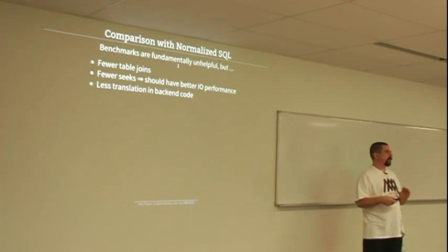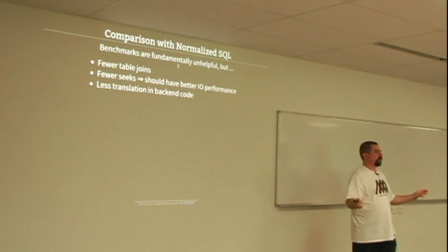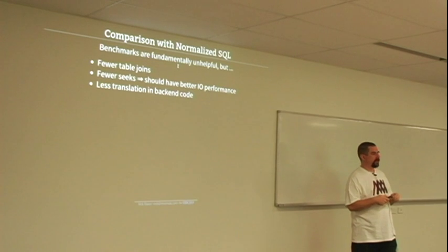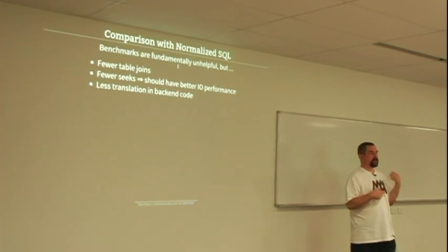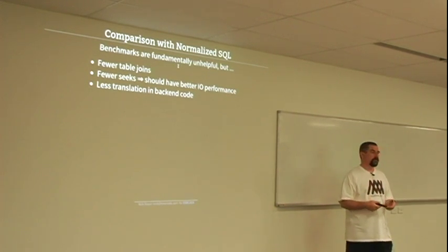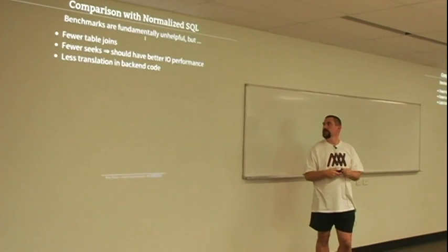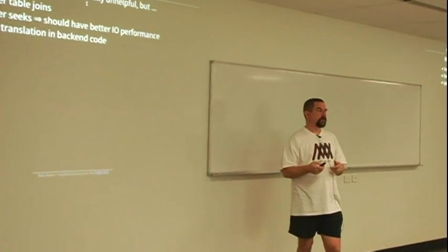Benchmarks are just not helpful for this — it depends so much on what your data and servers are shaped like. But it is an index lookup; if you look at query plans you can confirm it's using those indexes. Because you're doing fewer table joins and fewer seeks, in theory there should be far better IO performance than running through a whole series of joins. And the biggest saving is probably that there's almost no translation happening anywhere in the back end — you're not taking a Python class, turning it into an SQL query, and then translating the results back into a tree of Python objects. You're just using that JSON entity pretty much directly.